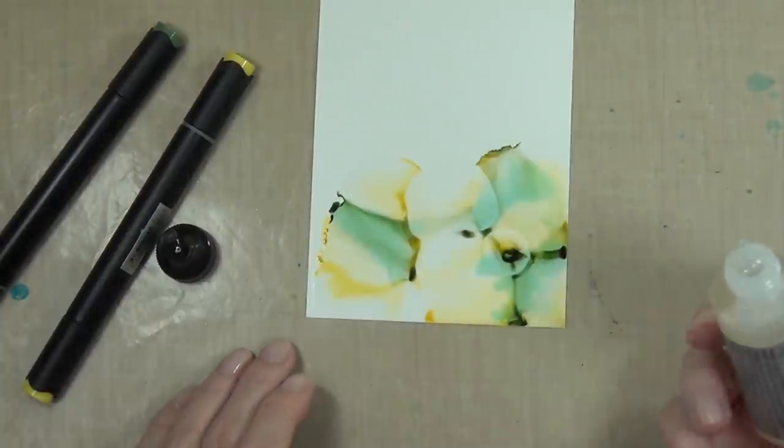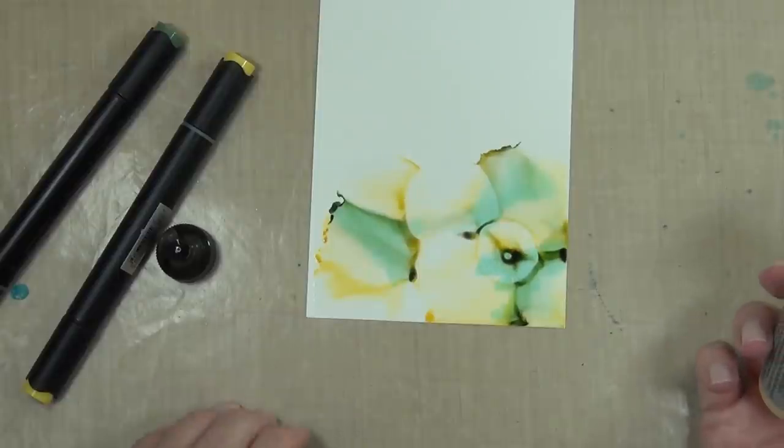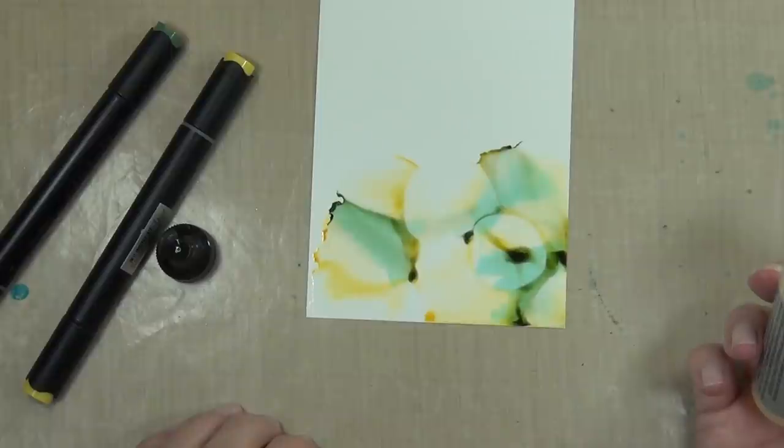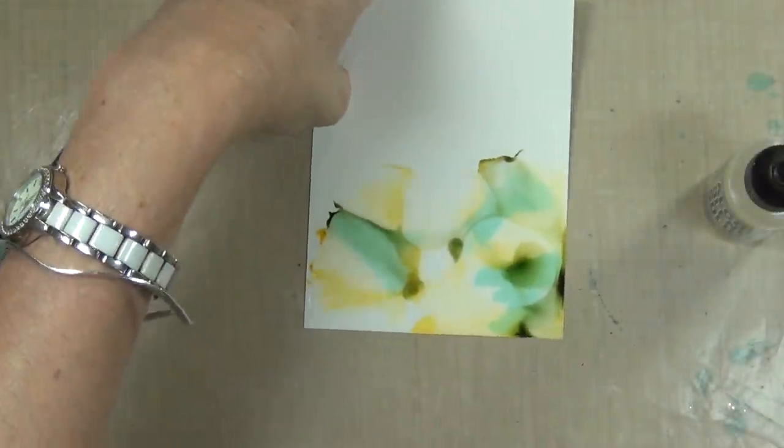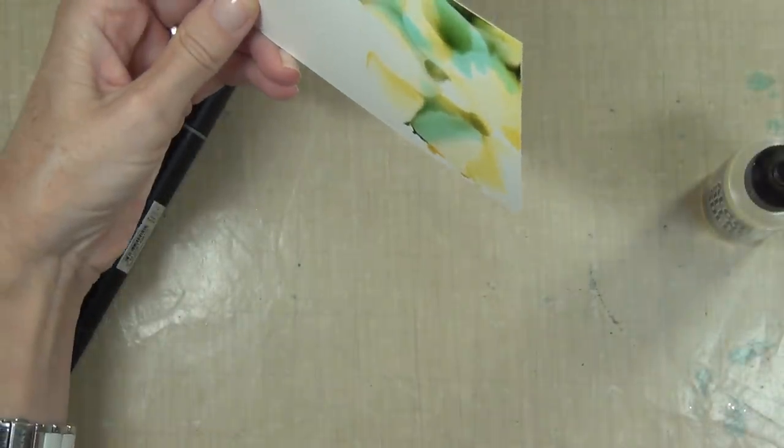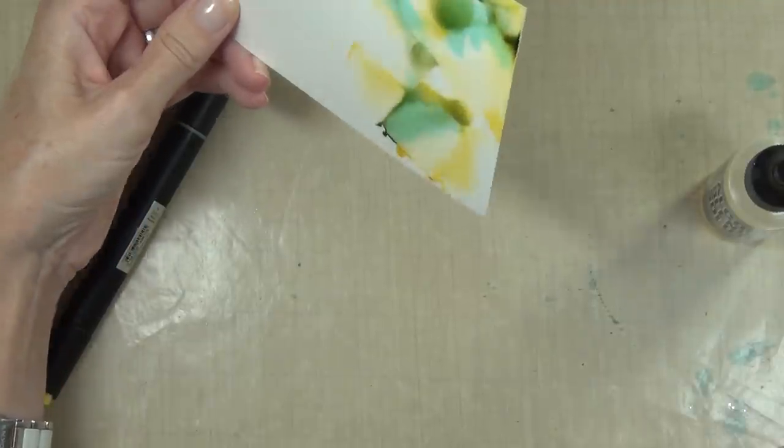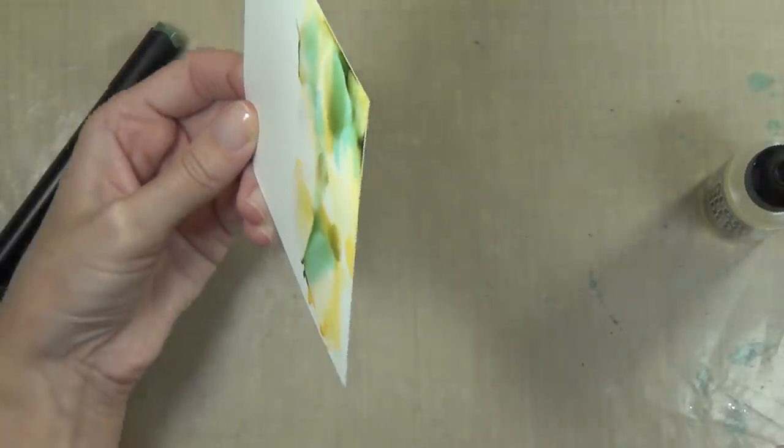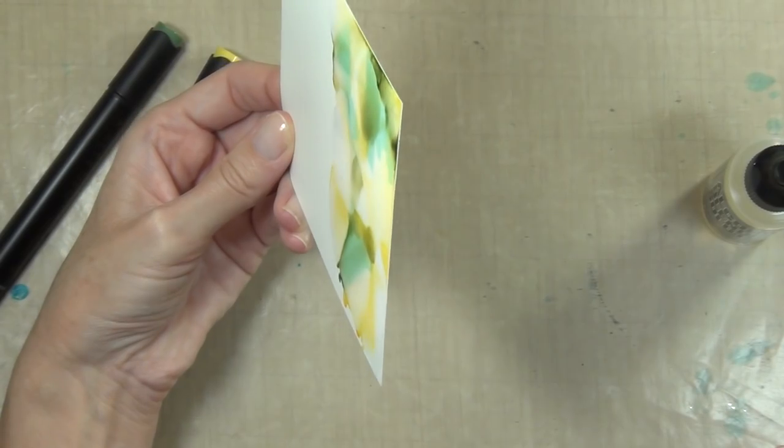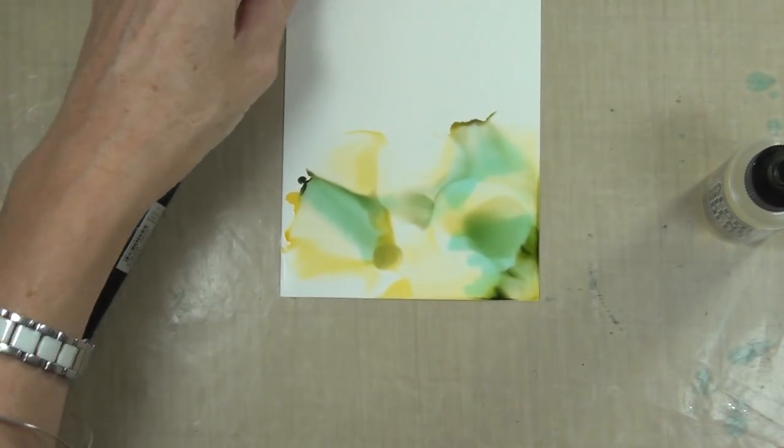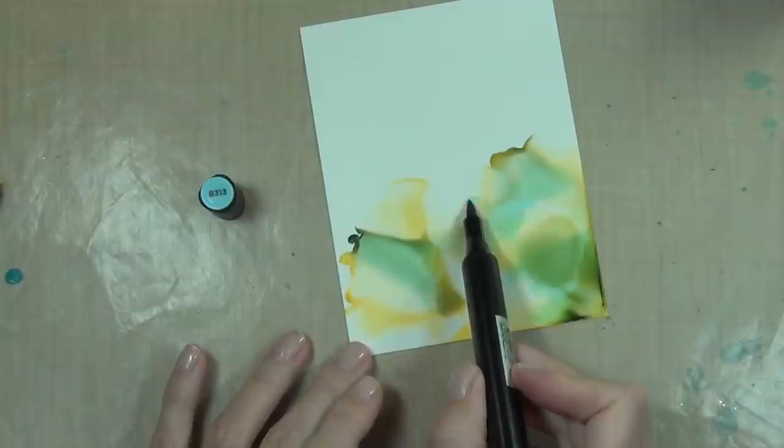I wanted to get rid of some of those harsh lines, so literally I just kept dropping on the blending solution and tipping my paper. Another way you can mix these colors would be to use a straw or just something to blow the colors around on the cardstock. So I just set that aside to dry for a few minutes.